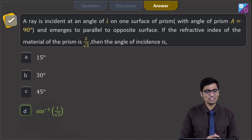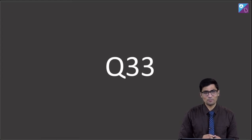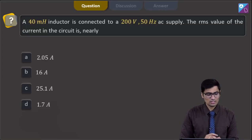Now, let us proceed to the next question which is question number 33. The question says a 40 millihenry inductor is connected to a 200 volt 50 hertz AC supply. The RMS value of the current in the circuit is nearly and the options are 2.05 ampere, 16 ampere, 25.1 ampere and 1.7 ampere.